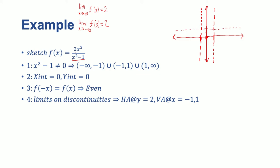For vertical asymptotes, we take two more limits. The limit as x approaches 1 from the positive side gives positive infinity, and from the negative side gives negative infinity. Because the function is even and symmetric, the same behavior occurs at x = -1. So our asymptotes behave in that manner at x = -1 and x = 1.